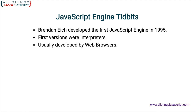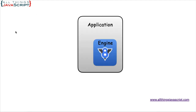JavaScript engines are usually developed by companies that produce web browsers, because web browsers are the main applications we think of when we think of things that interpret JavaScript. Let me show a diagram that illustrates how a browser incorporates the engine. The engine is a piece of code — represented here in blue — whose purpose is to take any JavaScript that is written and cause it to do something. That is incorporated in a larger application: the browser, represented by the gray area. The JavaScript engine is incorporated as a part of that.